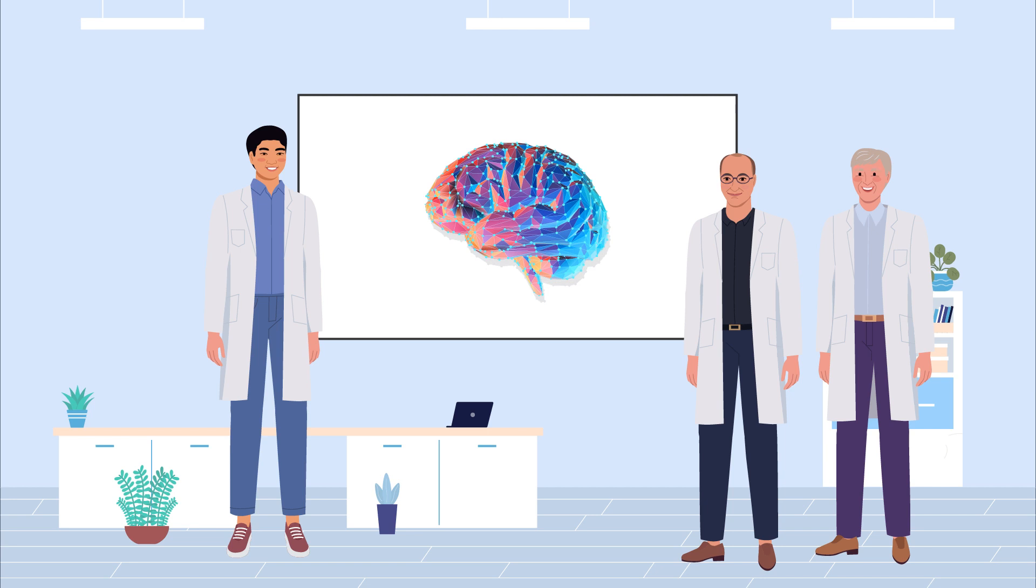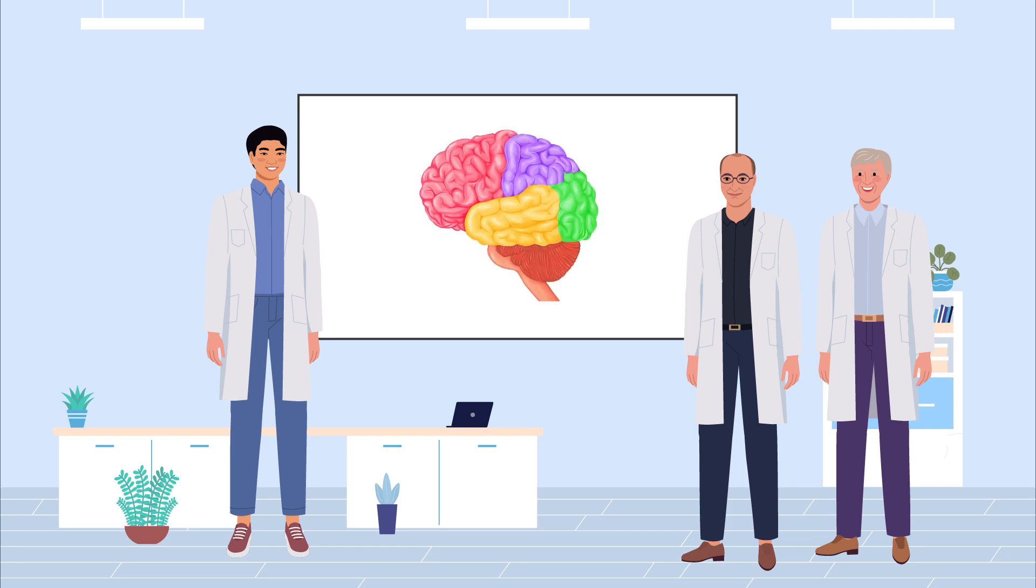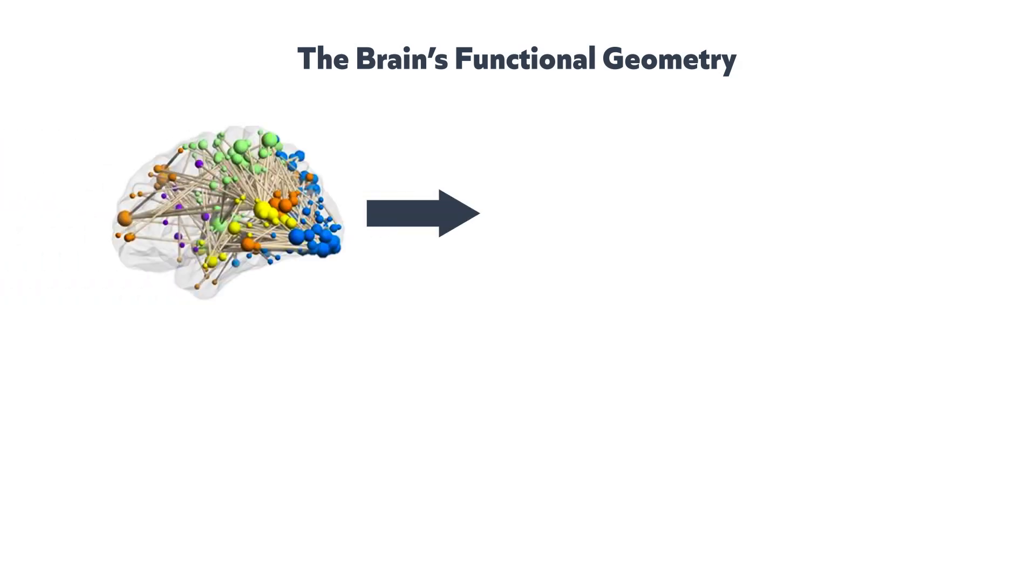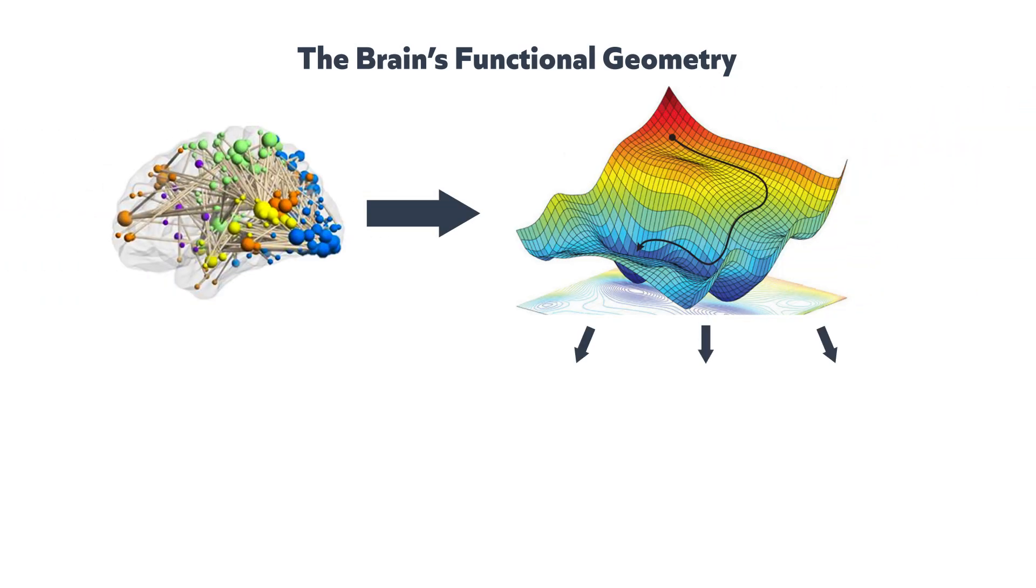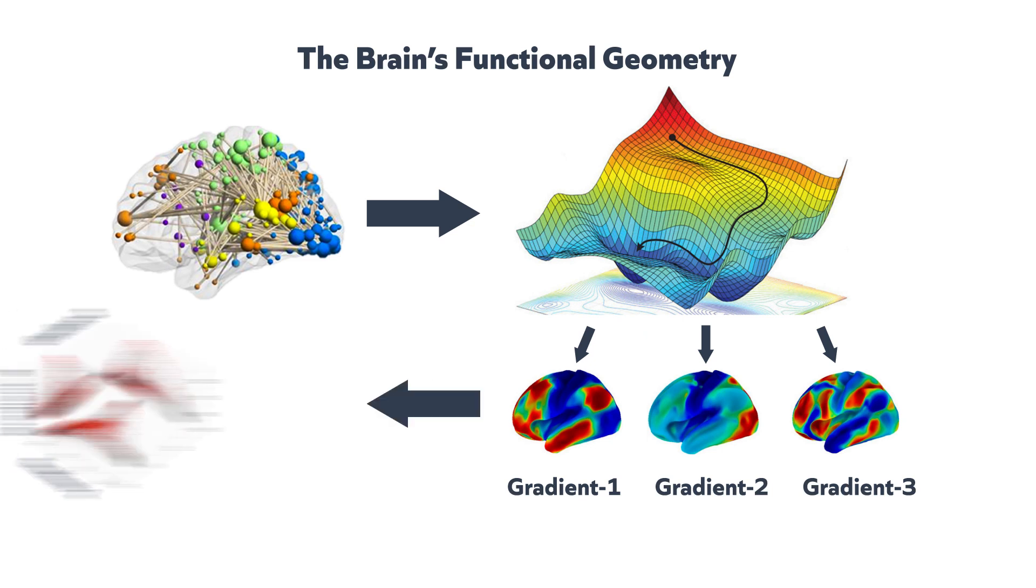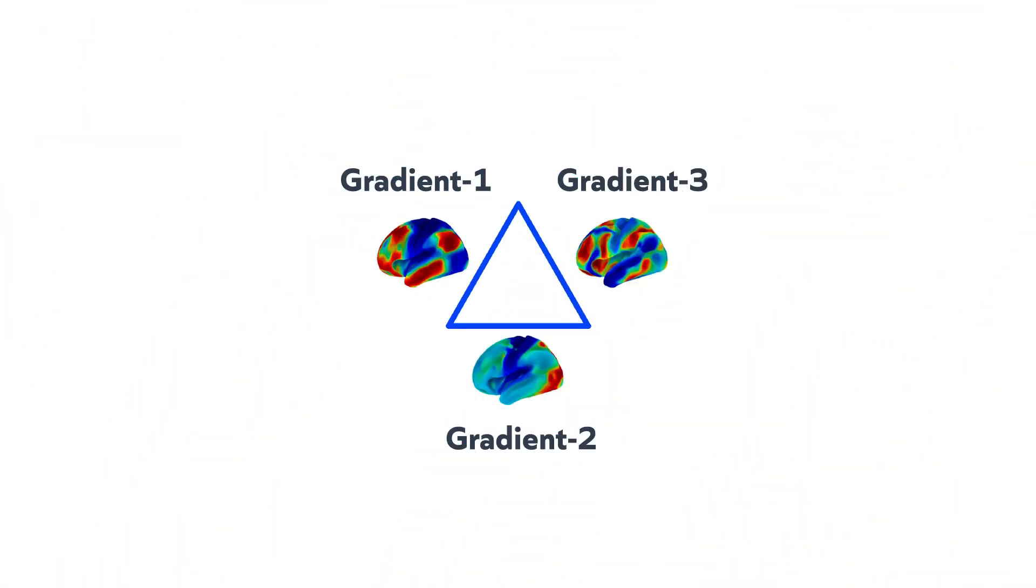In conventional brain imaging studies, scientists often focus on examining specific, well-defined brain areas. Instead of investigating clearly delineated regions, Huang, Mashour, and Hudetz explored the gradients across different brain areas.